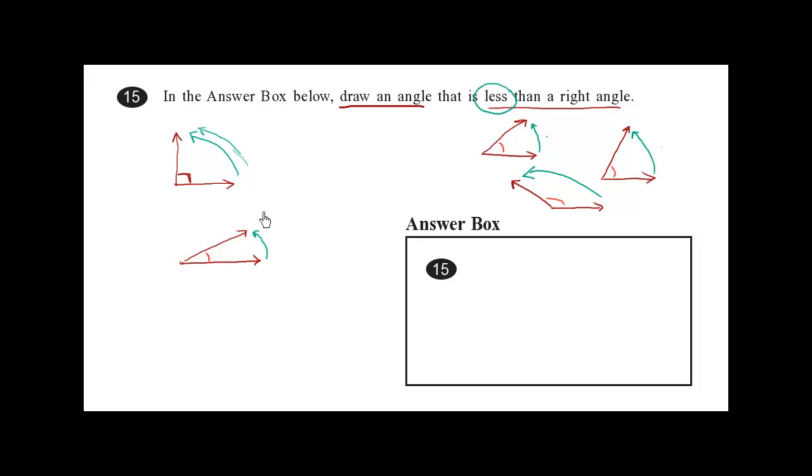And so if this one swings up less than this one, this angle is less than this angle. And in fact, the correct answer here for this problem would be anything less than straight up and straight across.